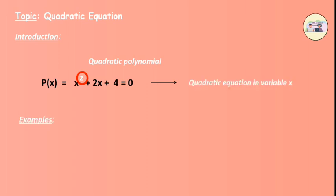Examples of quadratic equations. First: x squared plus 3x minus 5. Second: 3x squared minus 5x. Third: 5x squared.